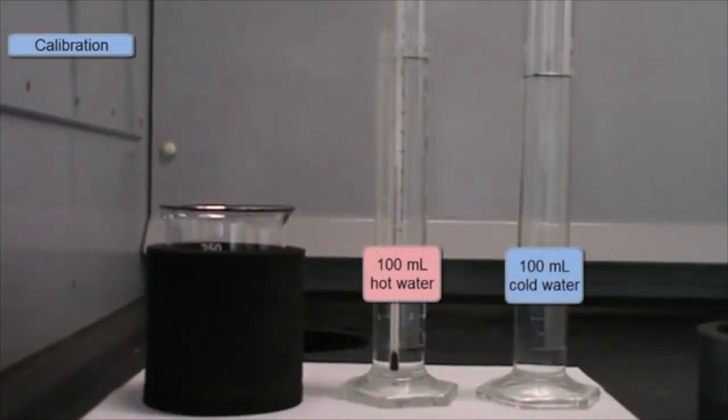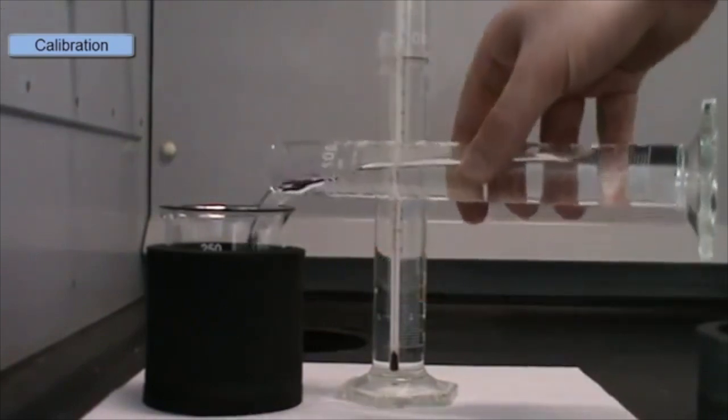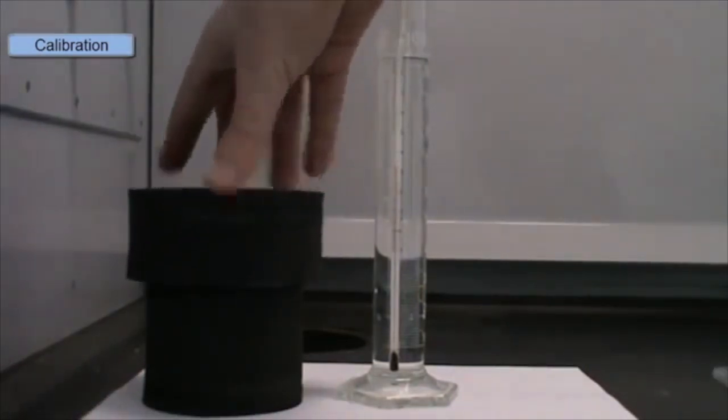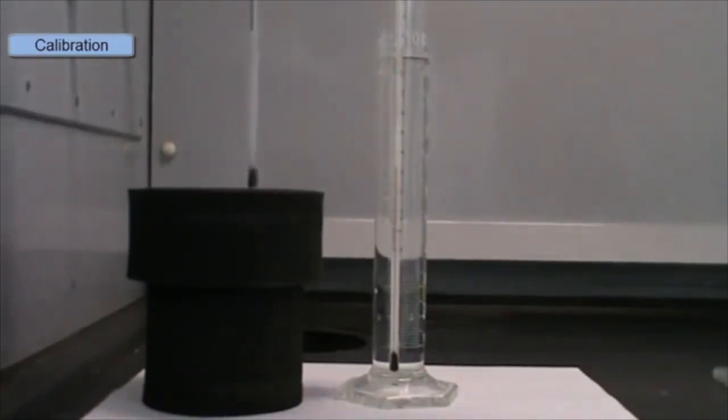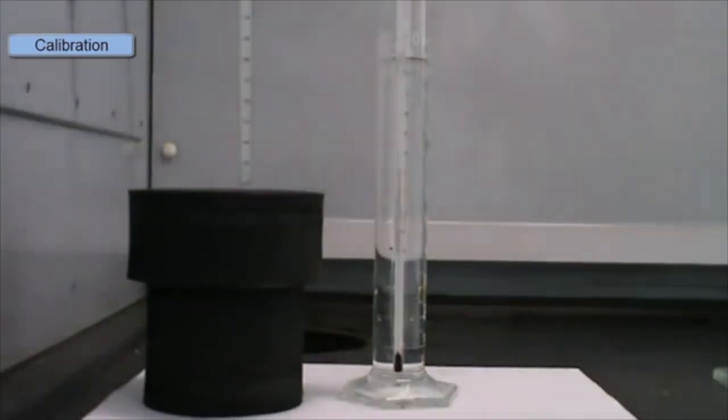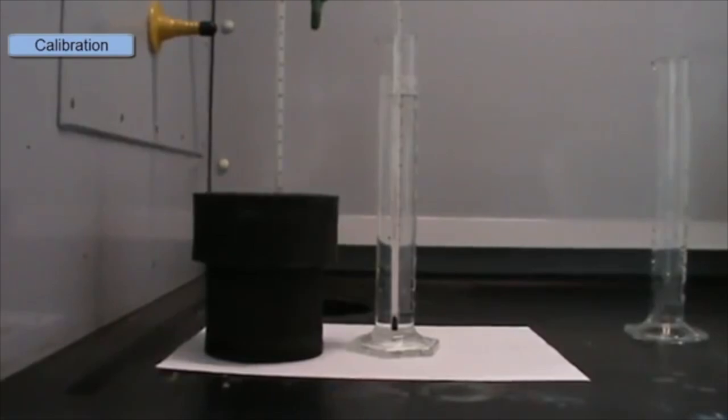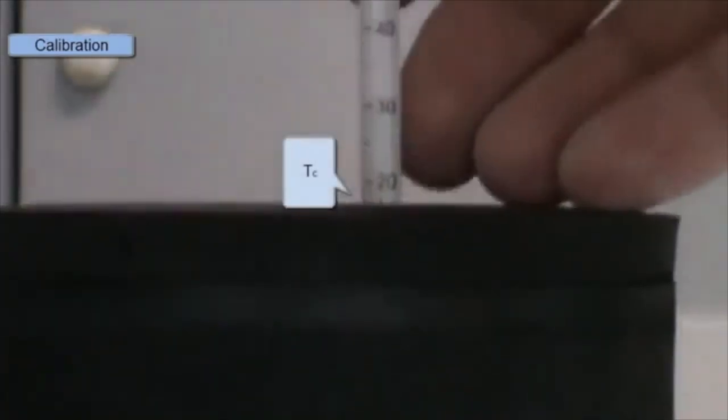So in the calibration step we'll take 100 mils of hot water and 100 mils of cold water. We'll add the cold water into the calorimeter, put on the lid and measure its temperature. So we'll put in there our thermometer and we'll measure the temperature. This is the temperature of the cold water. So our temperature of our warm water here is just under 33 degrees and the temperature of the cold water is just 18 degrees.